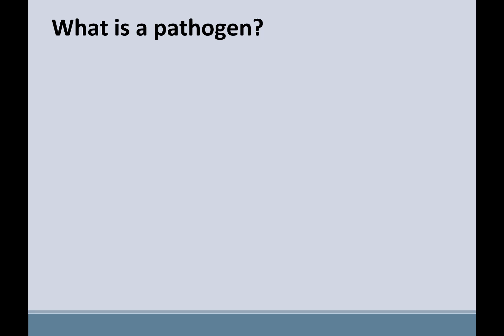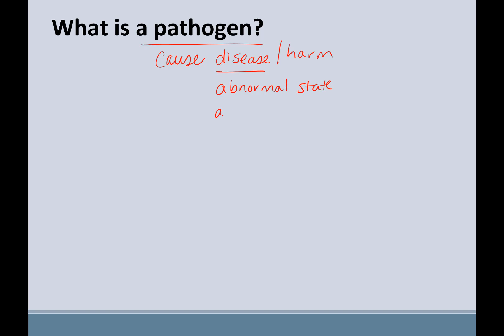For the second part of this talk on chapter 8 and 12, we're going to define what a pathogen is and some of the more specific interactions. We're not going to call them parasites; we're going to talk about them as pathogens. By definition, they cause disease or harm, and disease is considered an abnormal state or a state away from health. There are lots of different types of diseases, but we're really going to look at the infectious diseases.